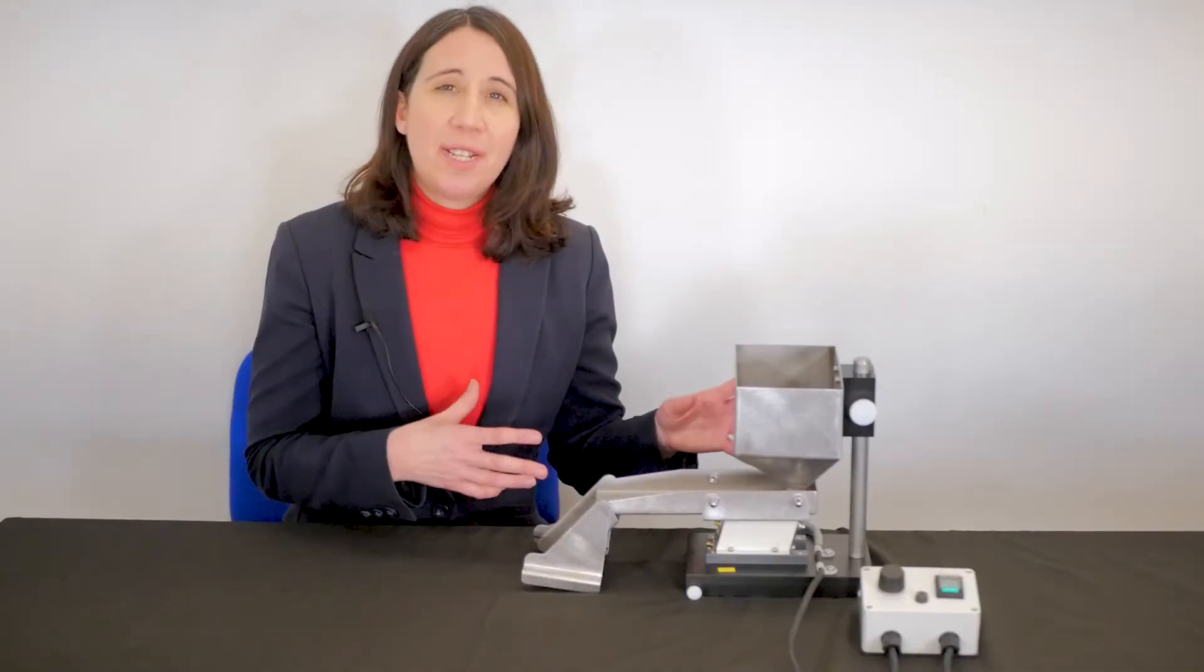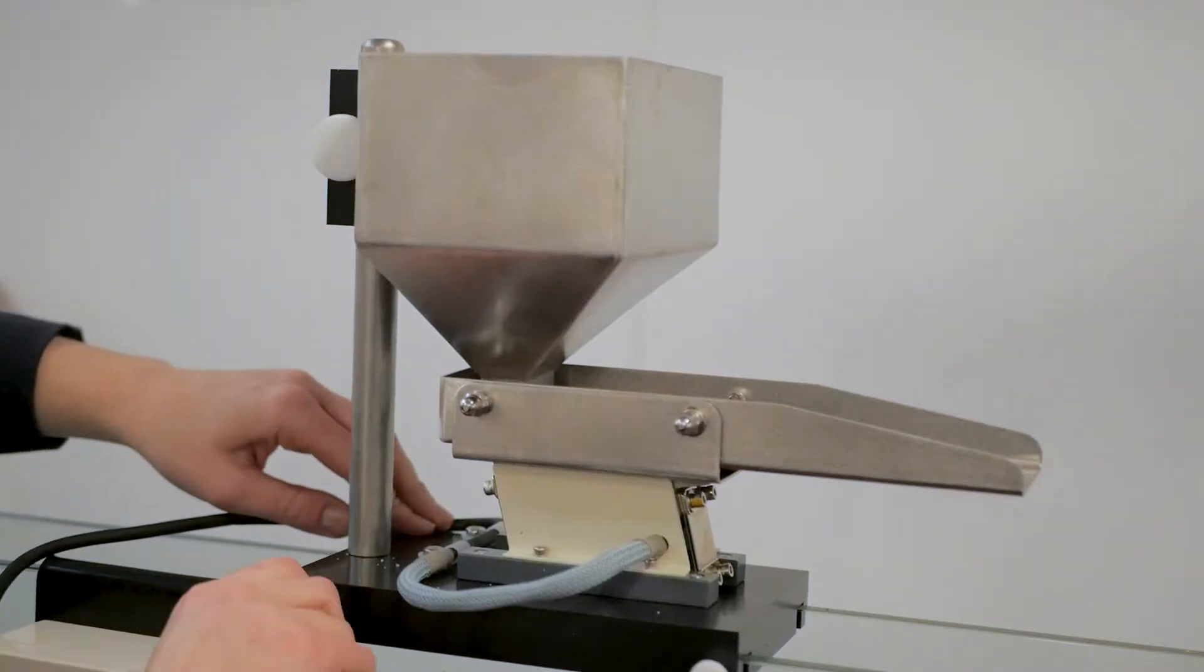The sediment feeder attaches onto the top of the FC80 channel, sliding into the grooves of the carrier and screwing into place like this.